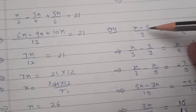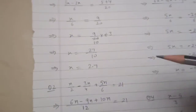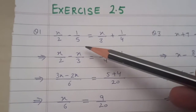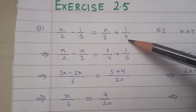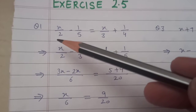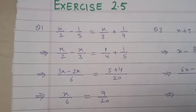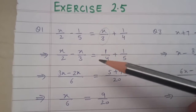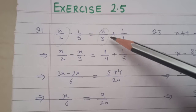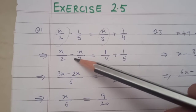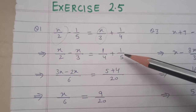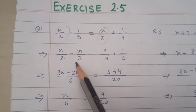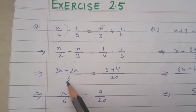Like we have binomials in this question. Now the first question is: x upon 2 minus 1 upon 5 is equal to x upon 3 plus 1 upon 4. We have fractions with variables here. What do we have to do? These are variable terms on one side. We will bring minus 1 by 5 to the other side, making it plus 1 by 5. Because these are fractions with variables, we will then solve them.